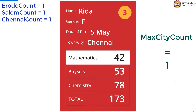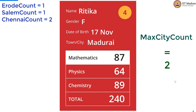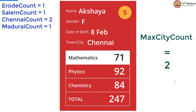And now Chennai has 2 students, so we increment Chennai count to 2. And since this is larger than the max city count being 1, we are going to change our max city count value from 1 to 2. Madurai is new, so Madurai count is declared, initialized to 0, and incremented by 1. Max city count does not change because 1 is still less than 2. One more Chennai, so Chennai count is now 3, which means it is greater than our current max city count value, so max city count has to be updated to 3.